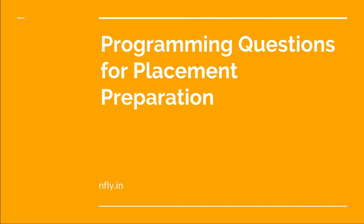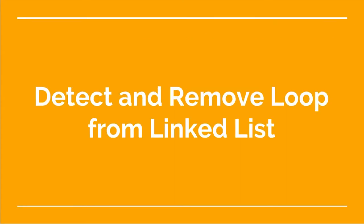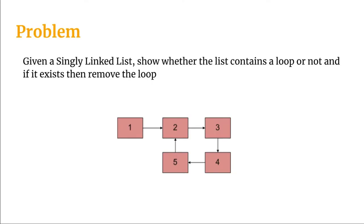Welcome back to this video lecture series on programming questions for placement preparation. Today the problem we are going to find a solution for is: detect and remove loop from linked list. The problem statement is: given a singly linked list, determine whether the list contains a loop or not, and if it exists, remove the loop. This is a very popular and important question when talking about linked lists.